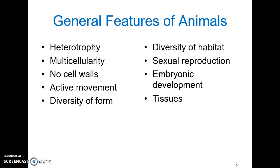Animals have a wide array of diversity of habitat as well. They can live in marine, freshwater, land, or terrestrial environments. The most common place to find an animal, though, is marine or ocean habitats.